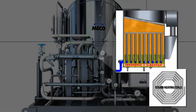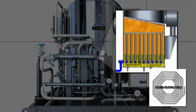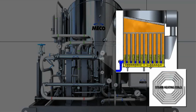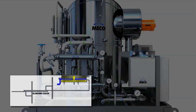Steam heating coils in the bottom of the evaporator further heat the water, causing it to percolate and boil up through the evaporator tubes, converting feed water to vapor. A portion of the feed water in the bottom of the evaporator is removed and discharged to waste to control the concentration in the evaporator.